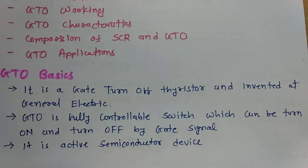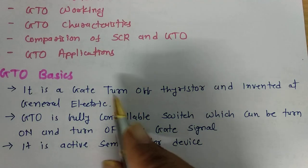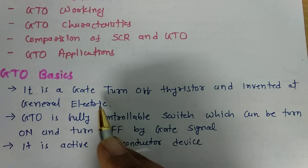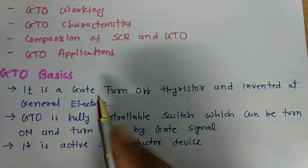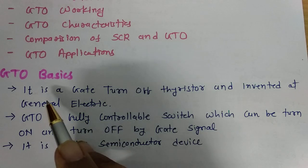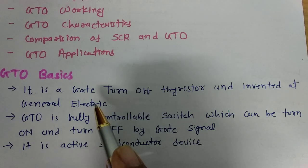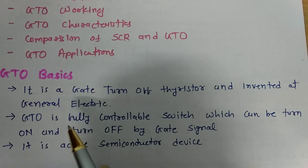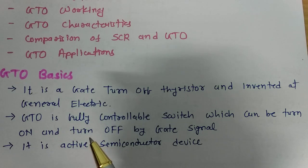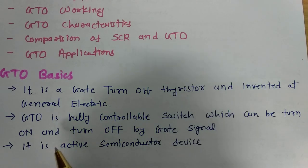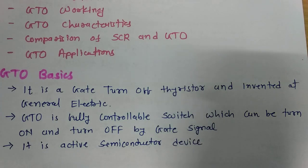When we talk about GTO, it is the gate turn-off thyristor, and it was invented by General Electric. GTO is basically a fully controllable switch that could be turned on or turned off by a gate signal. It is an active semiconductor device.